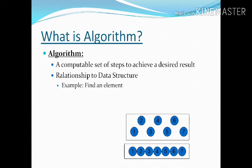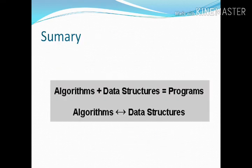First of all we should know what is algorithm. An algorithm is a computable set of steps to achieve a desired result. The summary is: algorithm plus data structure gives us the program. We can say algorithm implies data structure, and data structure implies algorithm.